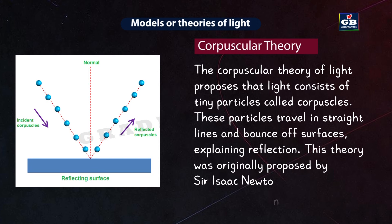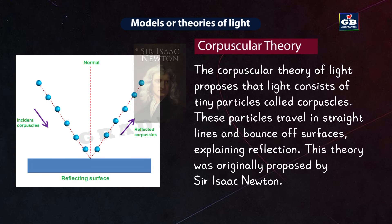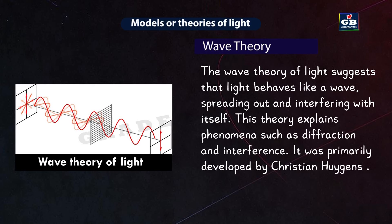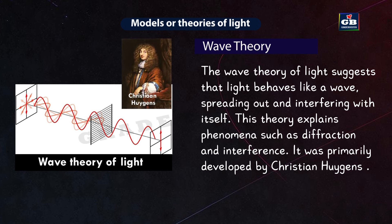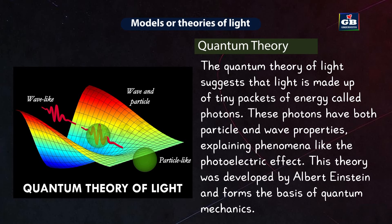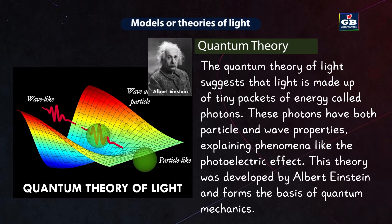The corpuscular theory, originally proposed by Sir Isaac Newton, proposes that light consists of tiny particles called corpuscles. These particles travel in straight lines and bounce off surfaces, explaining reflection. The wave theory, primarily developed by Christian Huygens, suggests that light behaves as a wave, explaining phenomena like diffraction and interference. The quantum theory, developed by Albert Einstein, suggests light is made up of tiny packets of energy called photons, which have both particle and wave properties, explaining phenomena like the photoelectric effect and forming the basis of quantum mechanics.